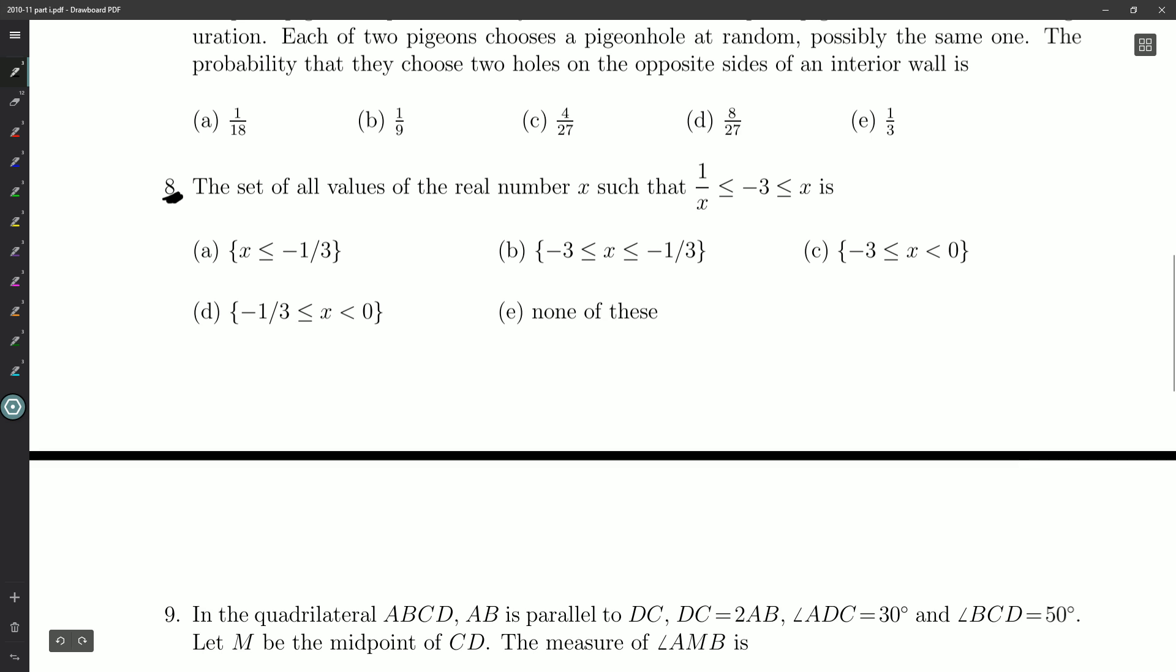The set of all values of the real number x, such that 1 over x is less than or equal to negative 3, is less than or equal to x, is.